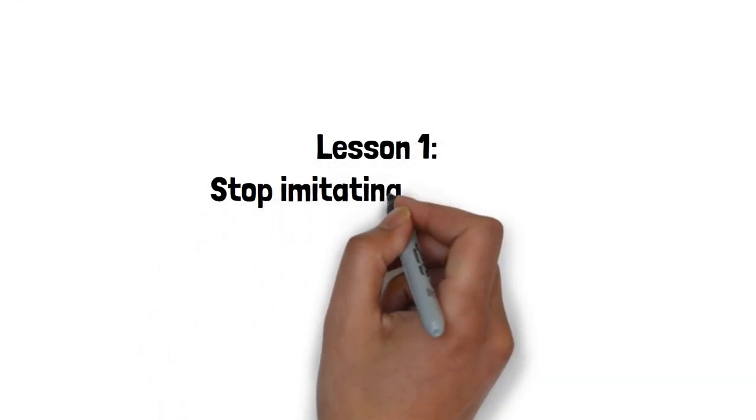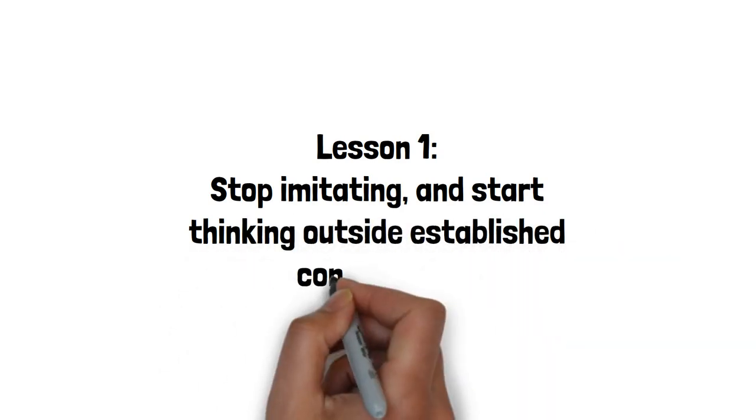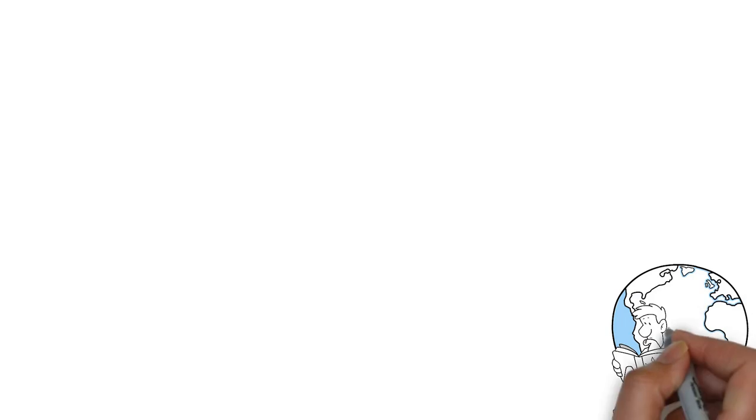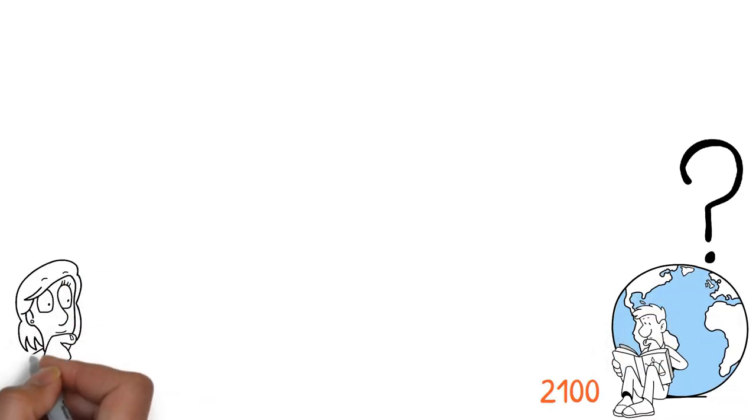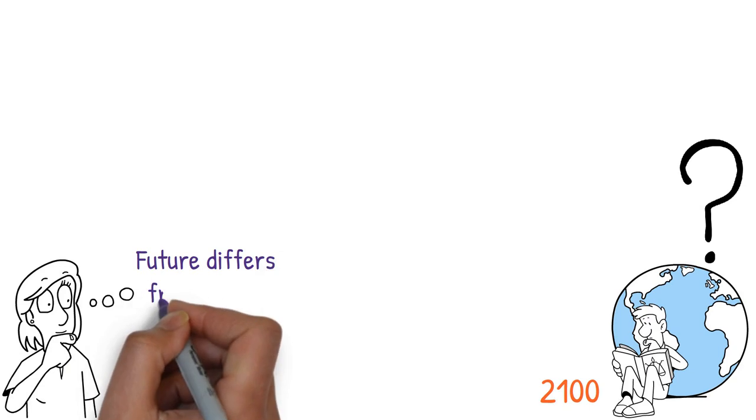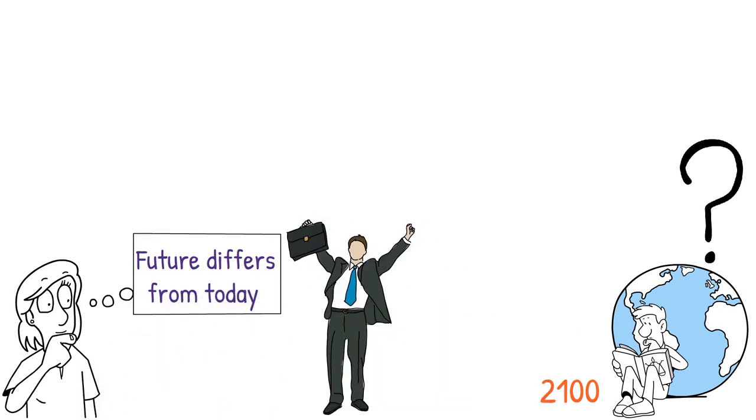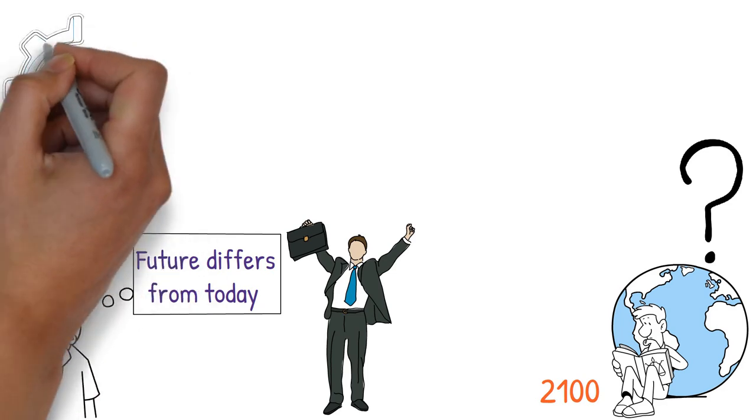Lesson 1: Stop imitating and start thinking outside established conventions. Imagine the world in 2100. What do you see? Chances are, your envisioned future differs from today, signifying progress. We all understand this, having seen technological advancements since our childhood.